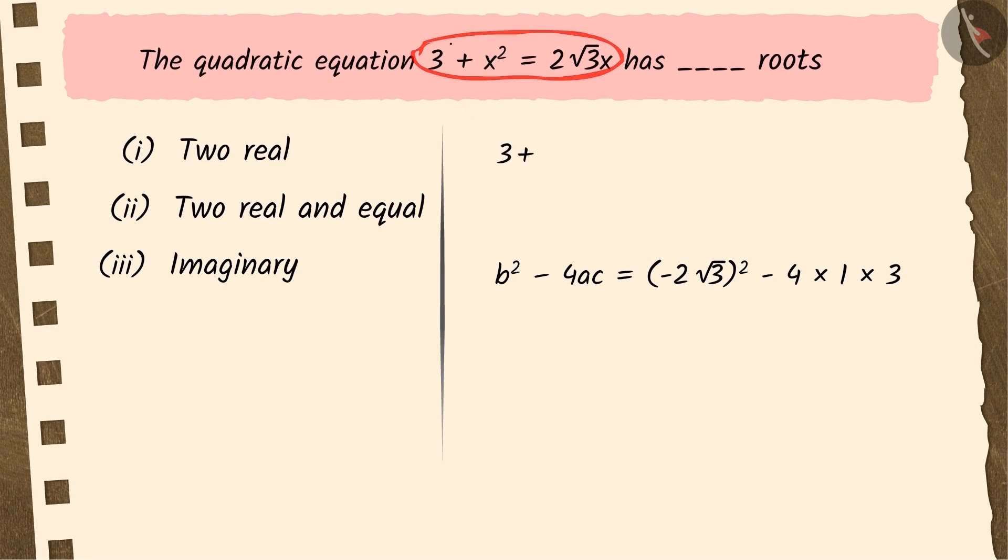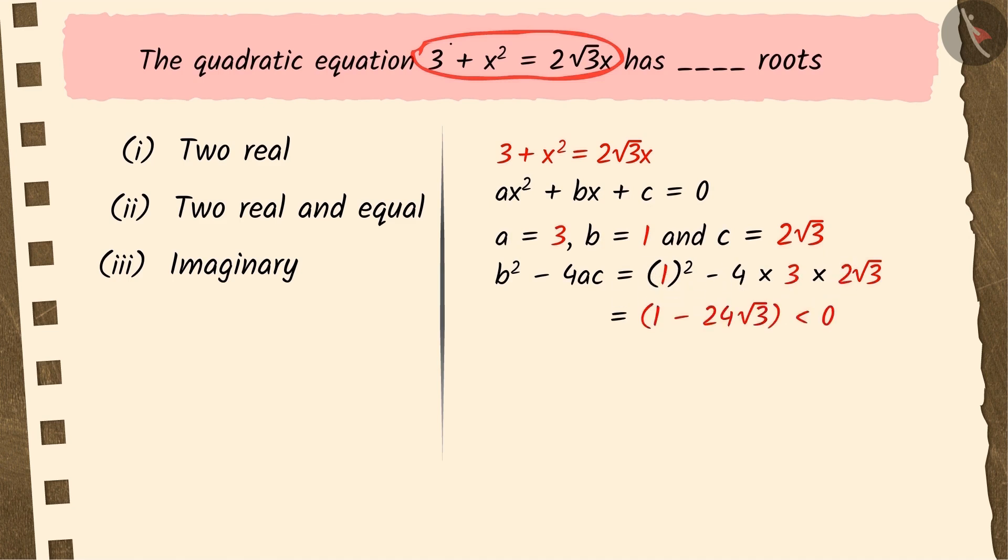Nandini found out the values of a, b, and c without writing the equation in the standard form and solved the discriminant by substituting the values of a, b, and c in it, from which she got the value of discriminant less than 0 and hence she concluded that the given quadratic equation will have imaginary roots. Therefore, Nandini chose option 3, which is incorrect.